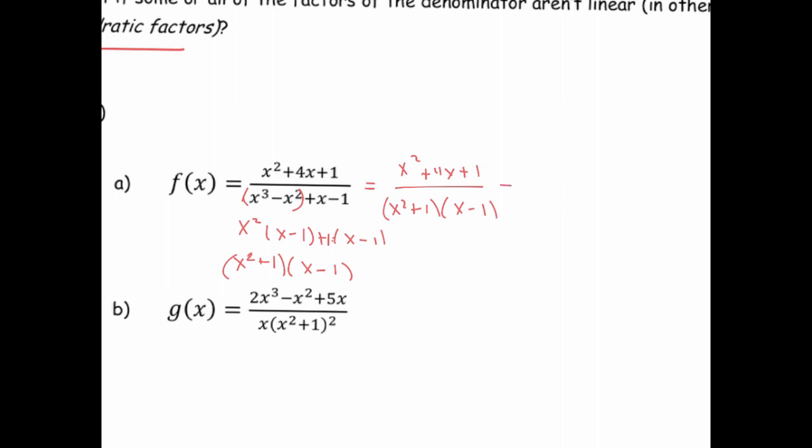So we know what to do with the linear term. That would just be a over x minus 1. Now the quadratic term here, x squared plus 1, cannot factor anymore, so it's an irreducible quadratic. The term above that has to look like a linear term. So you have to account for the possibility that the term above the quadratic could be linear. And in some sense, you could think of the term above the x minus 1 term here as being a degree 0 or a constant. That's really the only type of polynomial that has degree less than a linear term. So if there's an irreducible quadratic, you need to put a linear expression in the numerator.